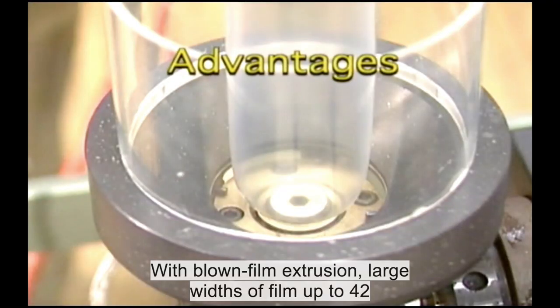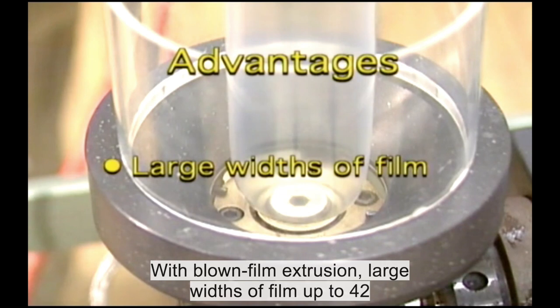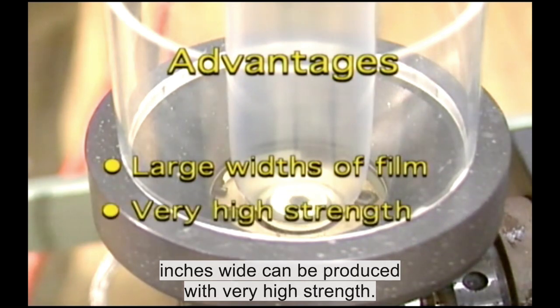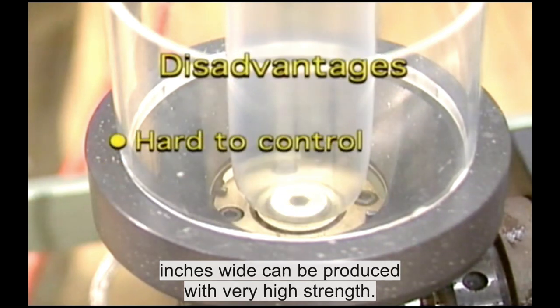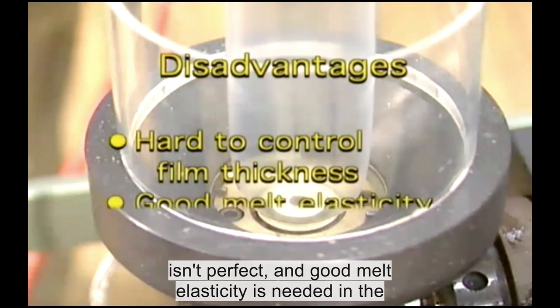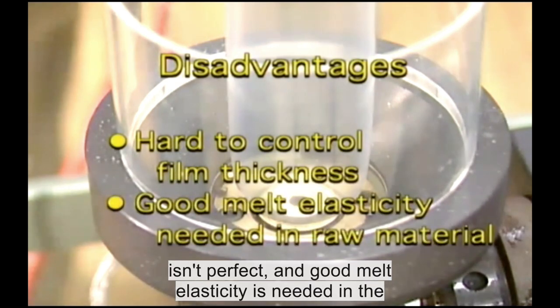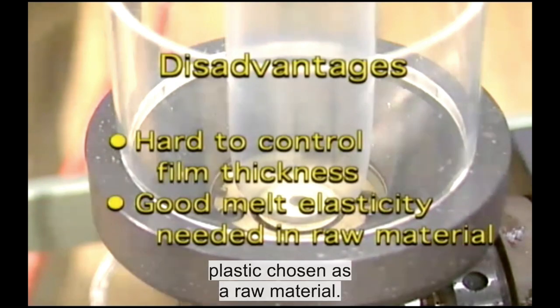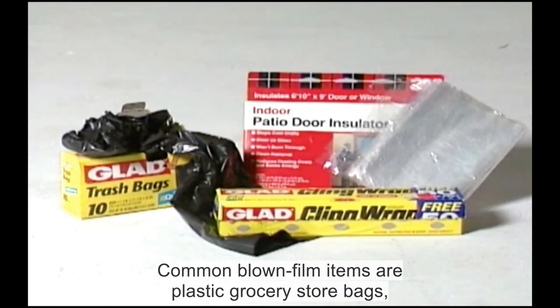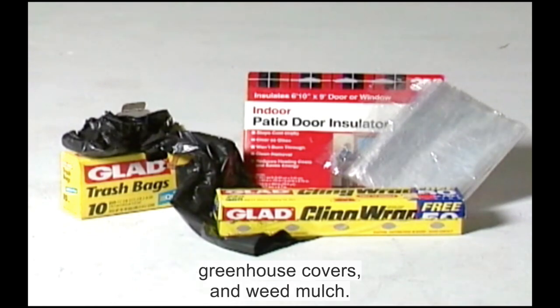With blown film extrusion, large widths of film up to 42 inches wide can be produced with very high strength, but the control of the film thickness during production isn't perfect and good melt elasticity is needed in the plastic chosen as a raw material. Common blown film items are plastic grocery store bags, greenhouse covers and weed mulch.